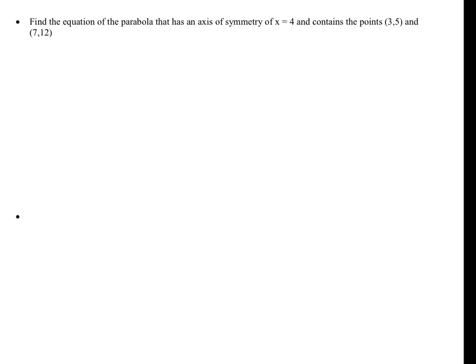Alright, here's another example. Find the equation of the parabola that has an axis of symmetry at x equals 4 and contains the points (3, 5) and (7, 12). So I've given you 2 points, and giving you 2 points on a parabola is not enough because you could have this one, or this one, or this one. You could have many, many parabolas through 2 points. However, by also giving you the axis of symmetry, I've given you enough things that you can find the equation.